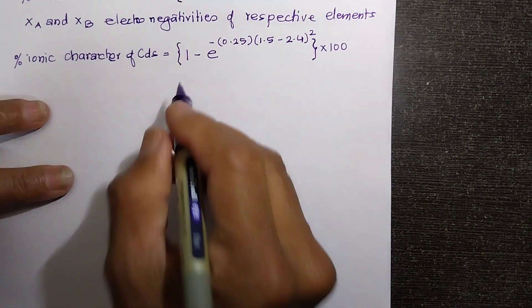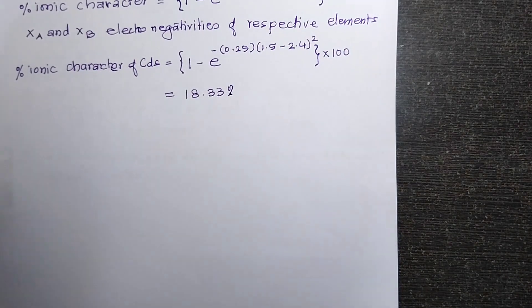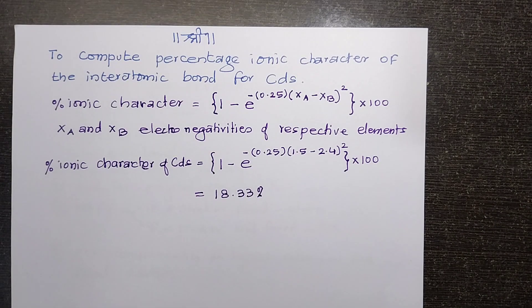This is now equal to 18.33. The ionic character of cadmium sulphide is 18.33. Thank you.